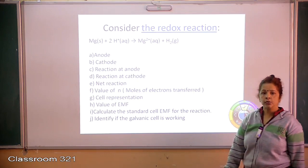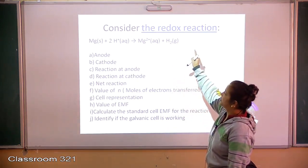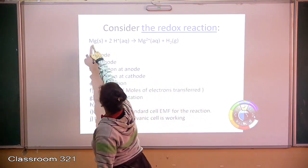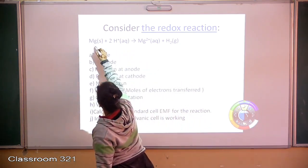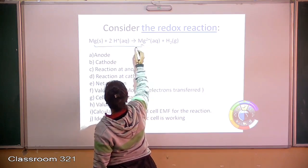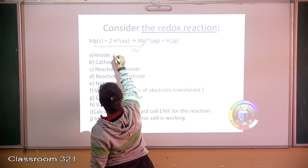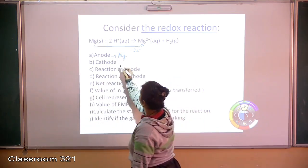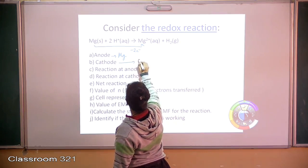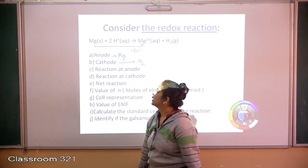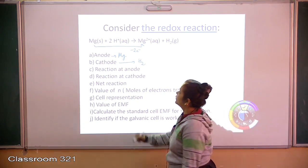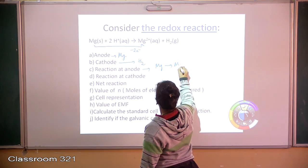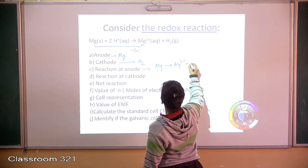I will take up a question to end my lecture. Given a reaction of a cell where magnesium is changing to Mg²⁺, there is a loss of 2 electrons, therefore the anode is magnesium undergoing loss of electrons. Automatically, the cathode becomes hydrogen. At the anode there is always oxidation: Mg → Mg²⁺ + 2e⁻.